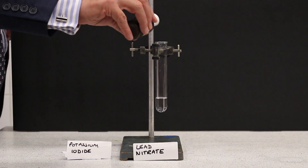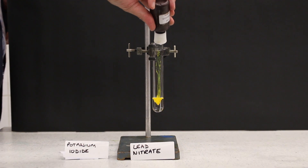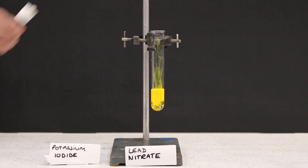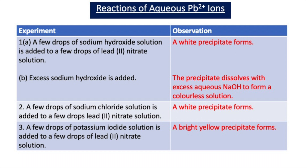In the last experiment, we put a few drops of lead nitrate into a test tube and add a few drops of potassium iodide solution. As soon as you add the potassium iodide, a bright yellow precipitate forms. This precipitate is lead-2 iodide, which has a characteristic bright yellow colour. We record this observation: adding potassium iodide solution to lead-2 nitrate produces a bright yellow precipitate of lead-2 iodide.